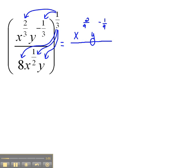Now, on the bottom, we're going to have 8 raised to the 1 third, which would be 8 to the 1 third. And x to the 1 half raised to the 1 third. Again, power to power, we multiply. So that would be x to the 1 sixth. And then here we have y to the 1 third power.